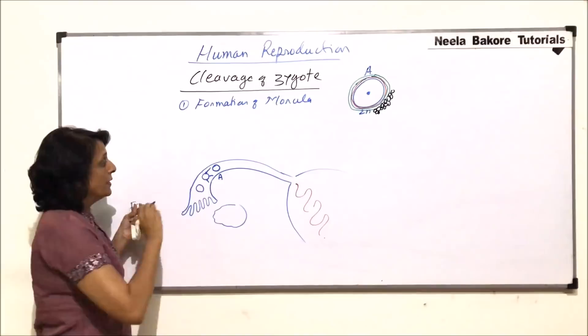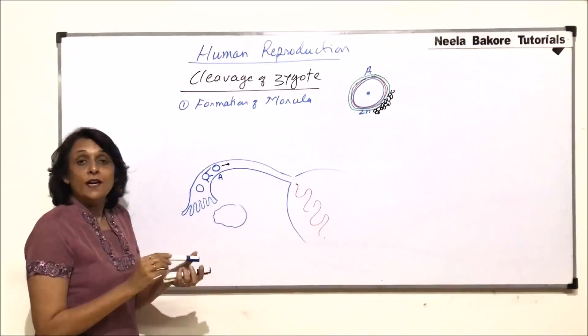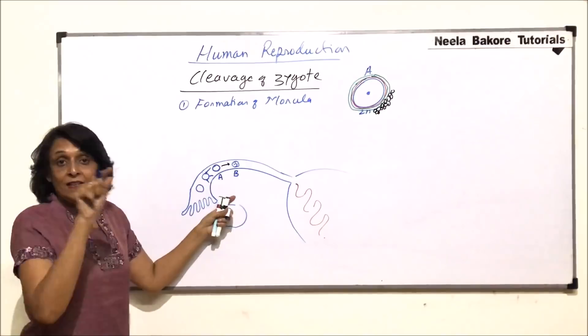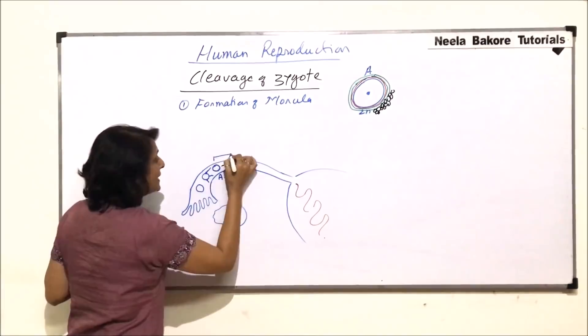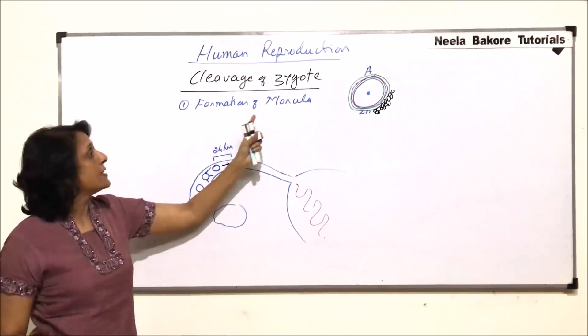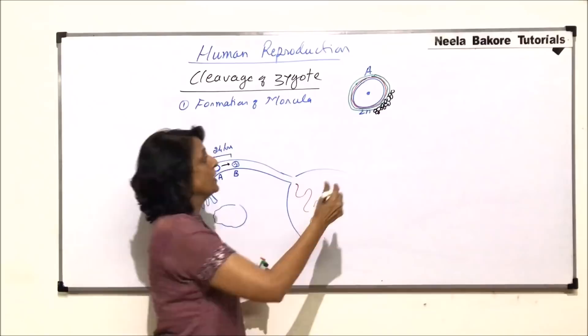After zygote formation, the zygote is now going to move towards the uterus. When it moves, it starts to divide. The first division is going to take place, so here we are going to see the two-cell stage. From A to B, it normally takes 24 hours. After fertilization has taken place and the zygote is formed, after 24 hours, the first zygotic division takes place.